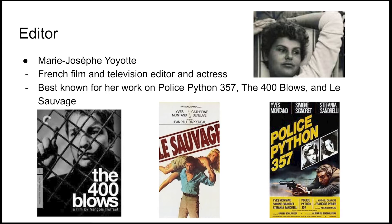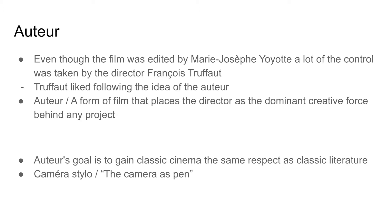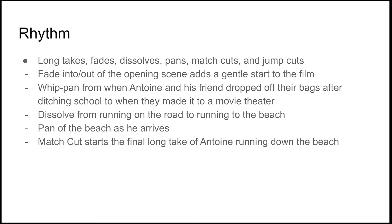She was best known for her work on editing Police Python 357, The 400 Blows, and Les Sauvages. As we learned in class about auteurs, I wanted to mention what an auteur was because although edited by Marie-Joseph Jouyot, a lot of the control was given to the director Francois Truffaut because of his belief in the auteur, which was a form of film that places the director as the dominant creative force behind any project.